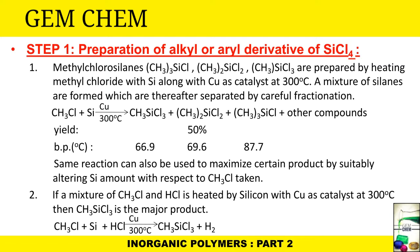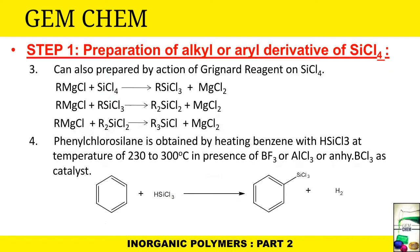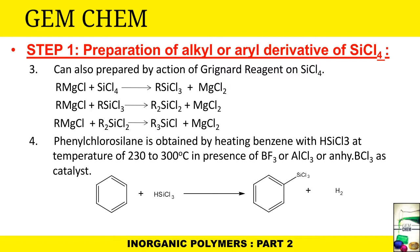If a mixture of CH3Cl and HCl is heated with silicon using copper as catalyst at 300°C, then CH3SiCl3 is the major product. The third method uses a Grignard reagent on SiCl4: RSiCl3 is obtained first; on further reaction R2SiCl2 is obtained, and further still R3SiCl is obtained. The fourth method: phenyl chlorosilane is obtained by heating benzene with HSiCl3 at 230–300°C in the presence of BF3, AlCl3, or anhydrous BCl3 as catalyst.